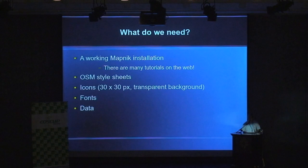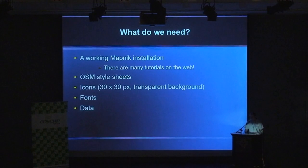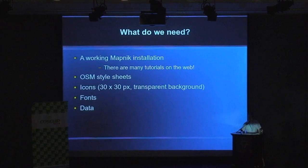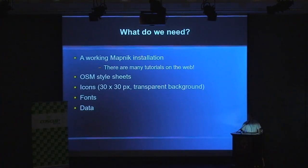Then we need style sheets. Style sheets are XML files which describe which features we want to display on the map and in which situation. In my case, I use the general OpenStreetMap style sheets and customize them for my needs. If you want to display your own tags — like amenities, historical places, or other items — which don't already have an icon, then we need our own icons.